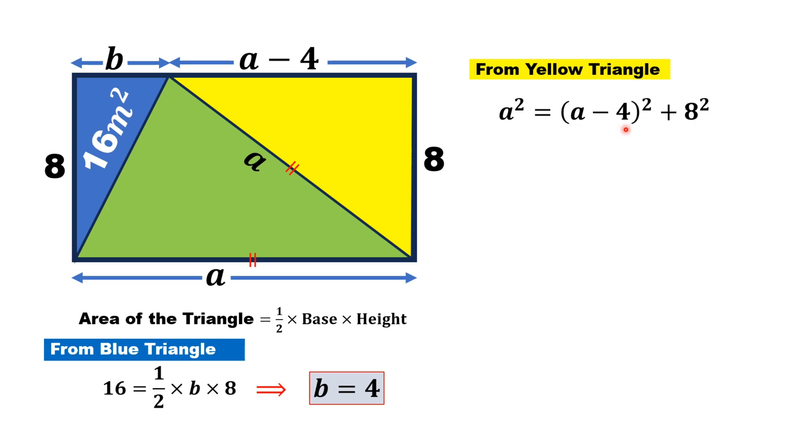Using the famous identity (A minus B) squared equals A squared minus 2AB plus B squared on this term, we get A squared equals A squared minus 8A plus 16 plus 64.